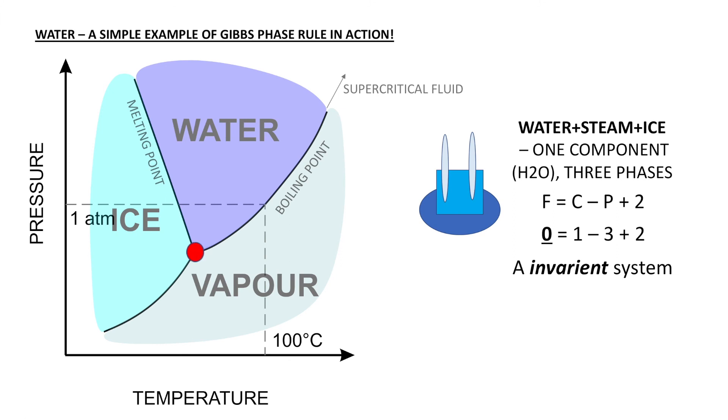As we go down to what's known as this triple junction, we have all the phases in one system—water, steam, and ice. One component still, H₂O, but now we have three phases. That means we have no degrees of freedom, what's then known as an invariant system where it's fixed at a certain pressure and a certain temperature and doesn't change.